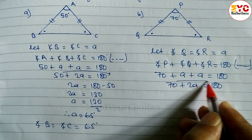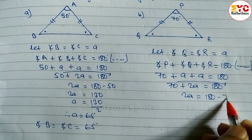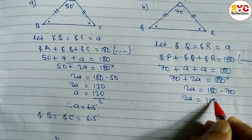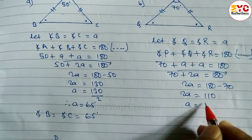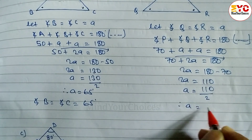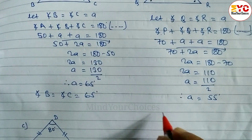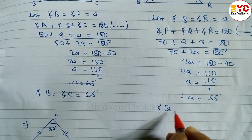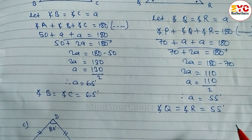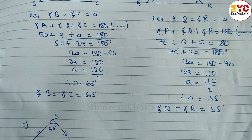So 70 plus A plus A — we have 2A — is equal to 180 degrees. These two are unlike terms, so 70 we have to take to the right side. 2A is equal to 180 minus 70. We get 110. Divide 110 by 2. Therefore A is equal to 55 degrees. Angle Q and angle R are the base angles. So angle Q is equal to angle R is equal to 55 degrees.